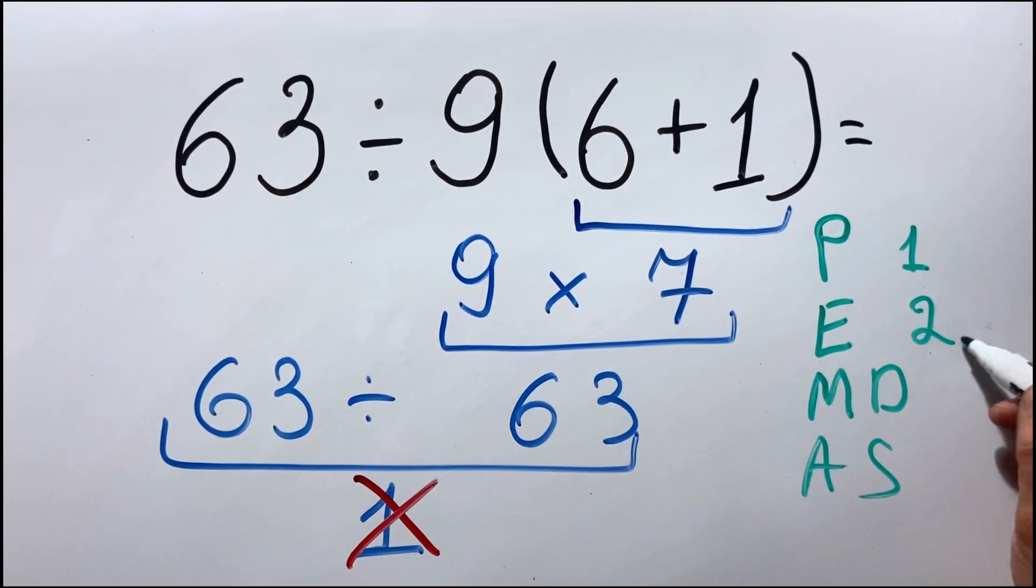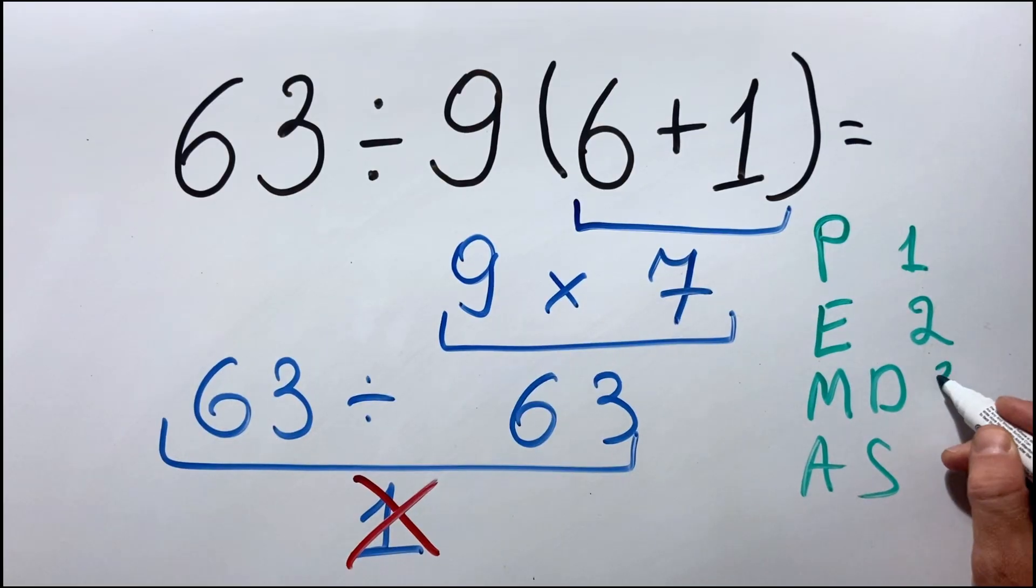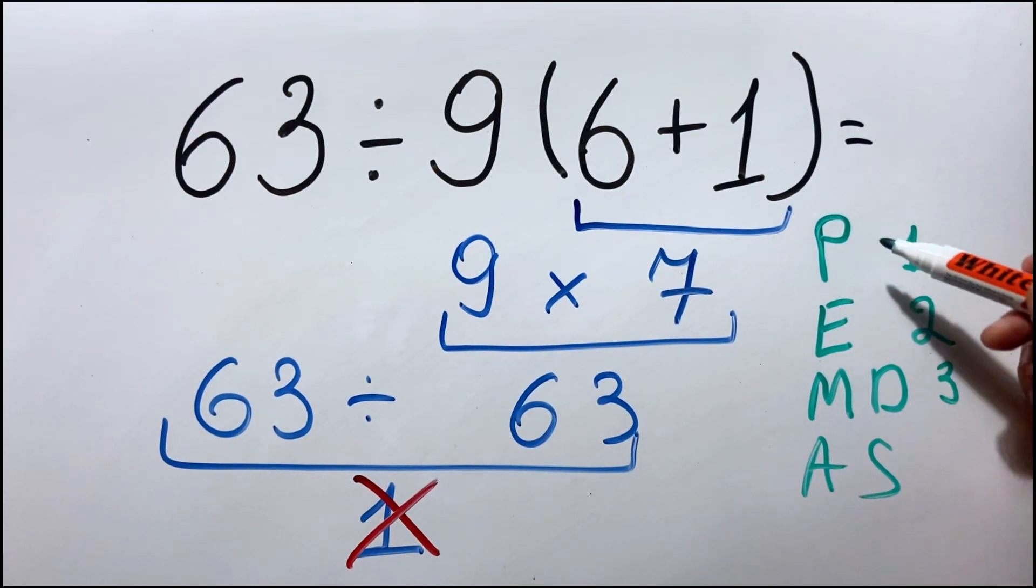Then exponents, we have it in the second place. Here we don't have it. Then the multiplication, we do it in the third place. So, parenthesis have higher priority over multiplication.